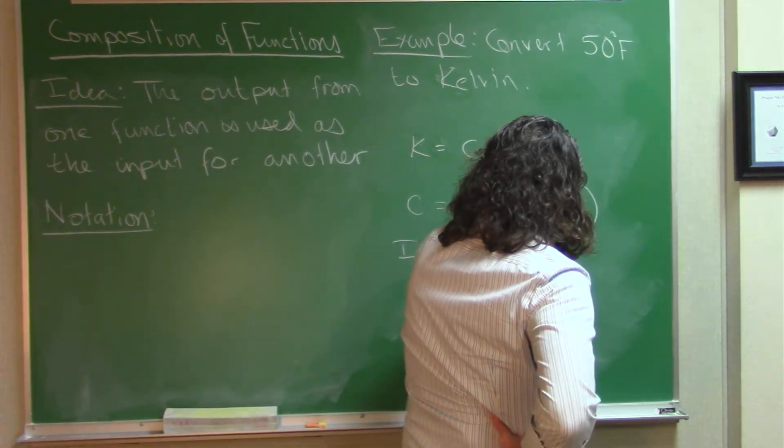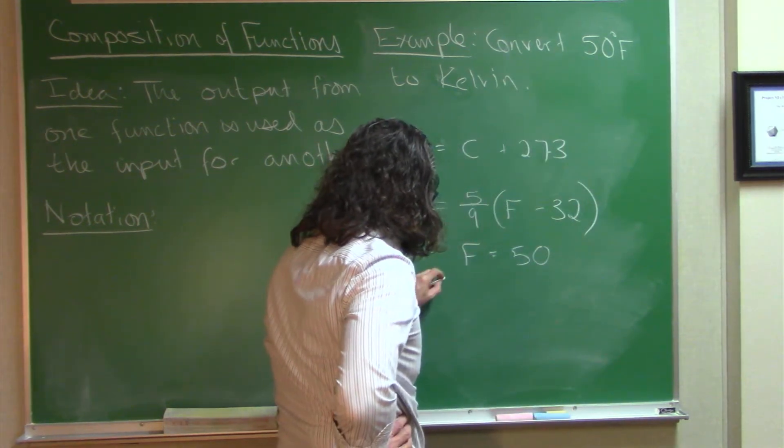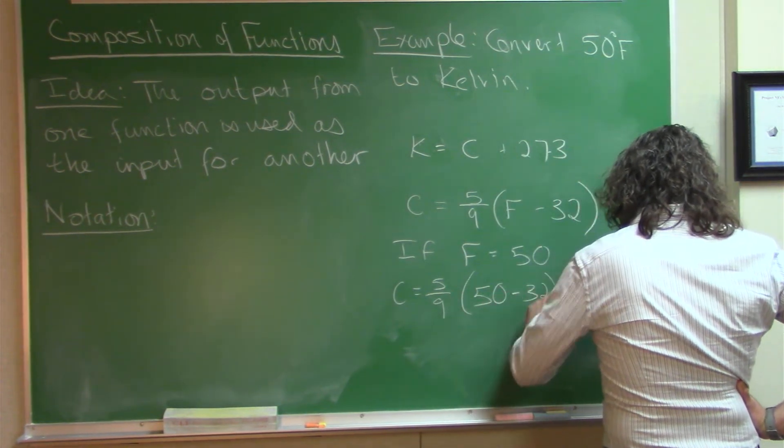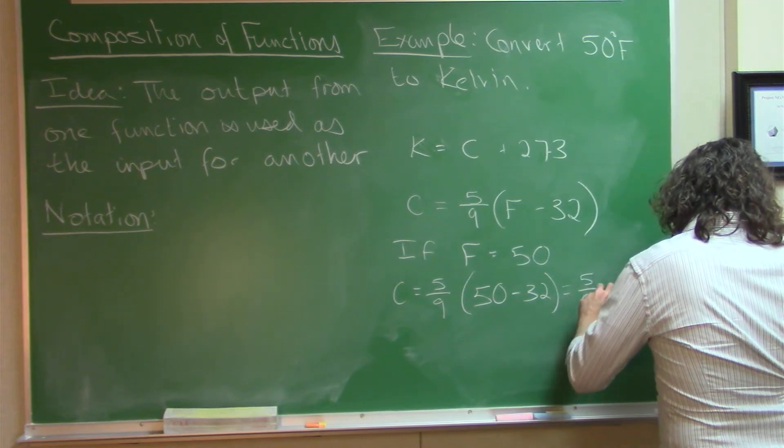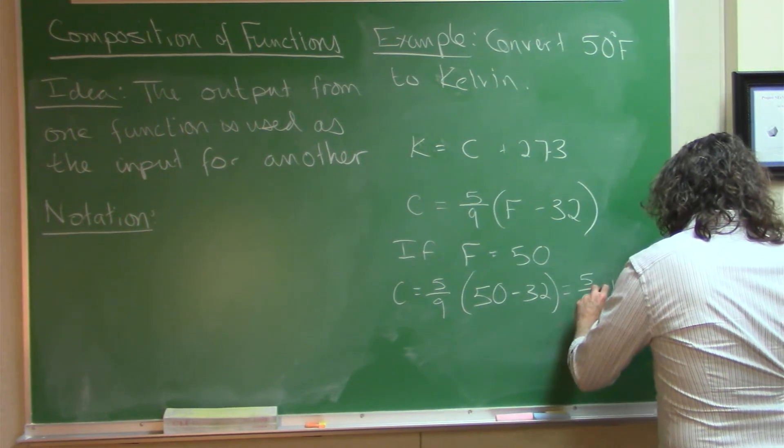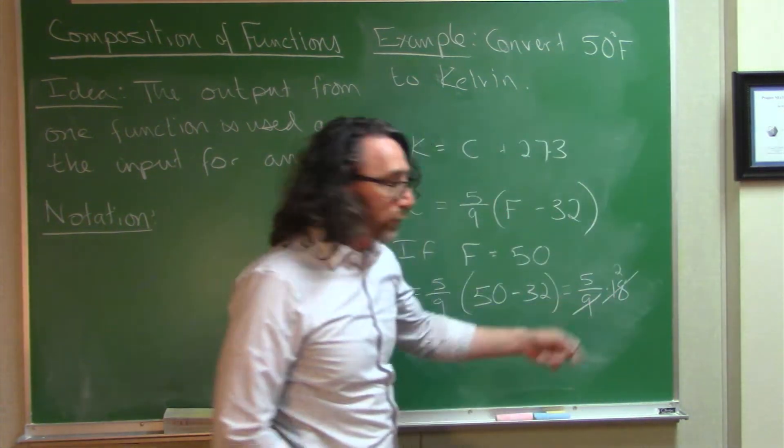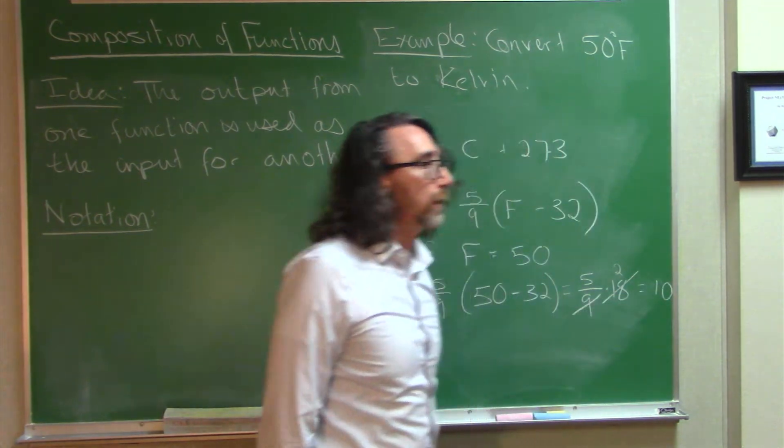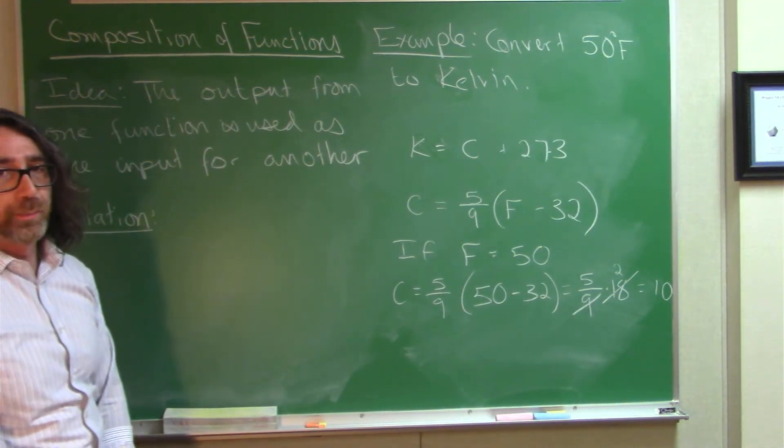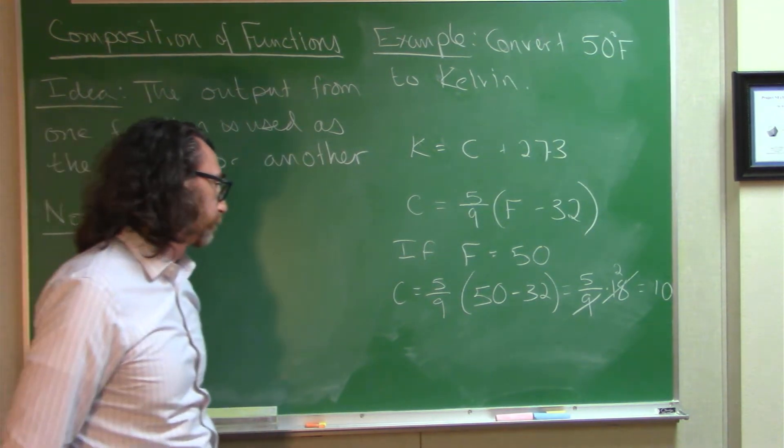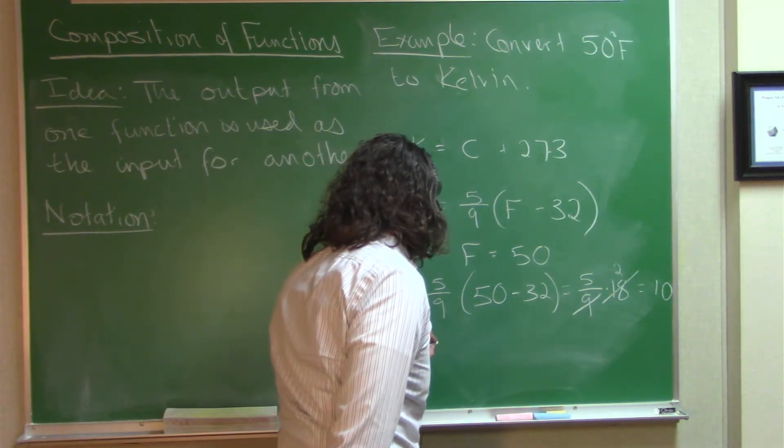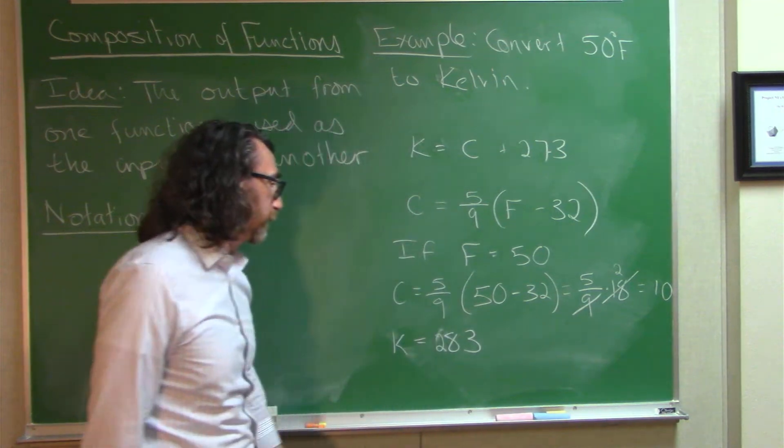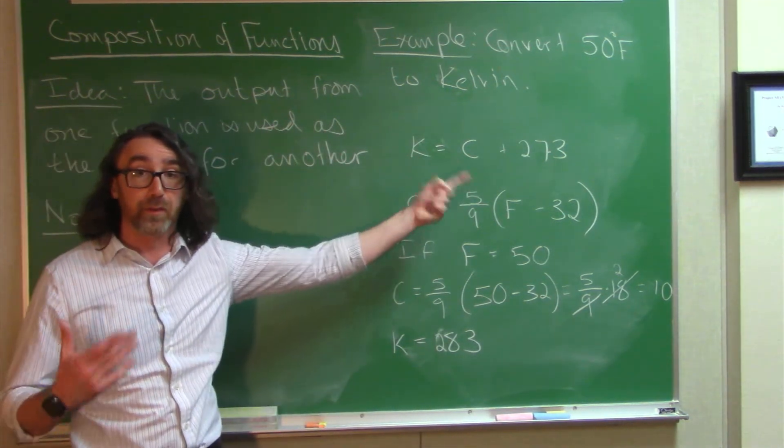So, if F equals 50, then C equals 5 ninths times 50 minus 32 equals 5 ninths times 18. Cancel out the factor of 9 that is inside the 18, and we get 10. Okay, so 50 degrees Fahrenheit corresponds to 10 degrees Celsius. And 10 degrees Celsius corresponds to 283 Kelvin by plugging the 10 into this formula.